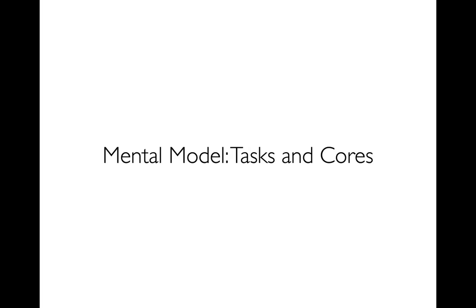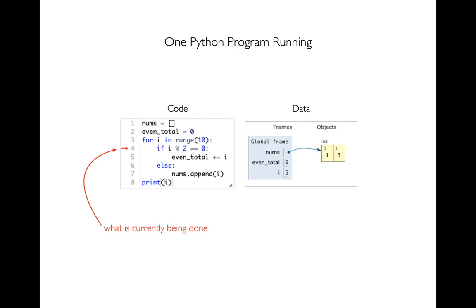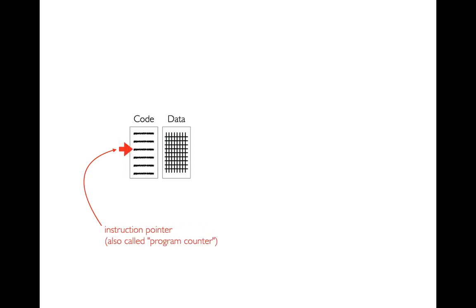Let's build the mental model. First, we want to think about tasks or threads. Here I have some example Python code on the left and some data on the right. There's a little red arrow pointing to whatever line of code we're currently executing. That notion of 'what are we currently doing' shows up everywhere — not just in Python, but at the machine level too. That little red arrow is called an instruction pointer; some people call it a program counter, which means the same thing.